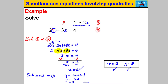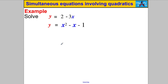Now I'm going to go straight into two examples where I use this technique of substitution, but where I'm also going to get a quadratic — something with x squared in it. Let's give it a go. Solve y equals 2 subtract 3x and y equals x squared subtract x subtract 1. These are a pair of simultaneous equations. Let's start as we always do by labelling them equations 1 and 2.